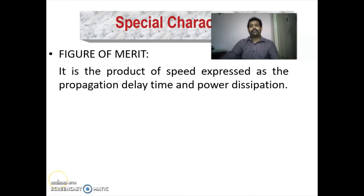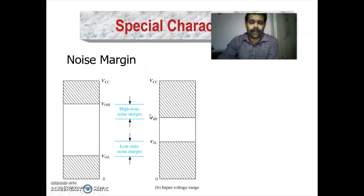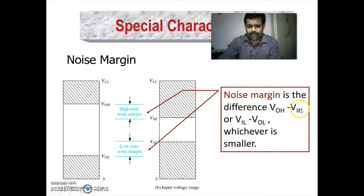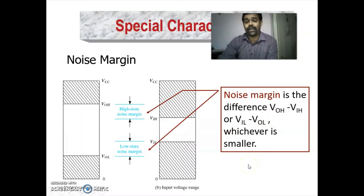Figure of merit is the product of speed expressed as propagation delay time and power dissipation. Noise margin is expressed as VOH minus VIH, and in other terms as VIL minus VOL.